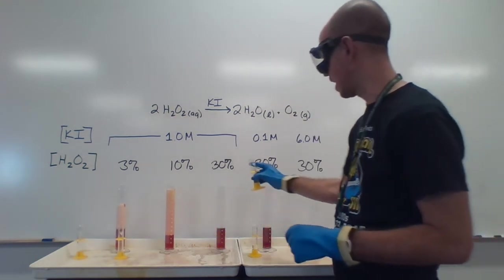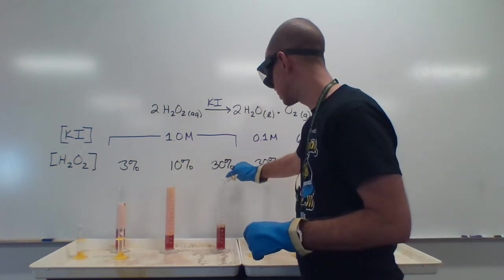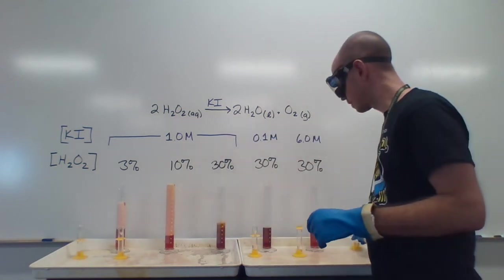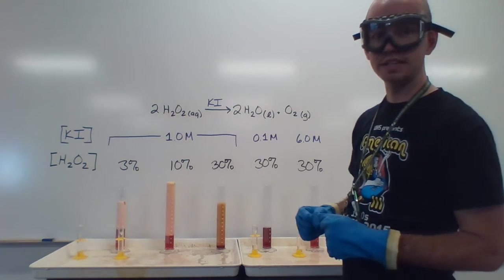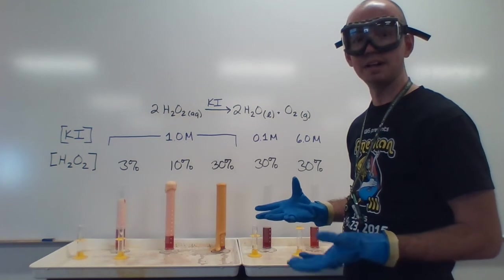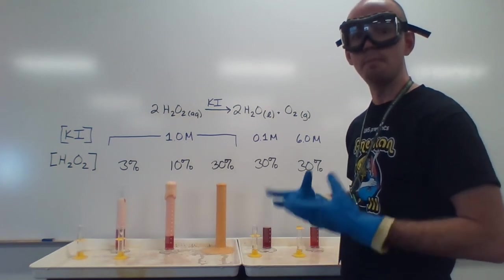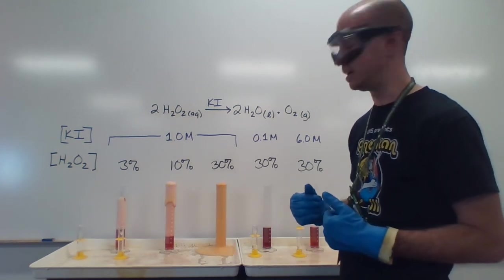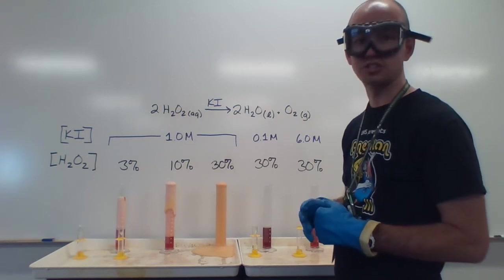While that one's going, I'm going to add the catalyst to the 30%. The 30% is already catching up and getting ready to pass, and there we go. So a much higher concentration, much more of the peroxide in there, giving a much faster reaction.